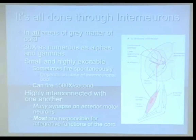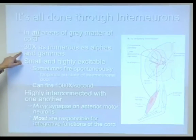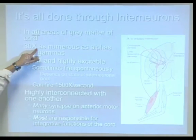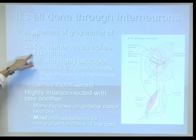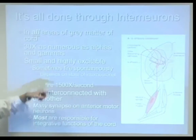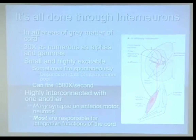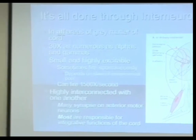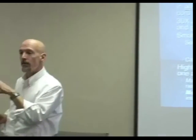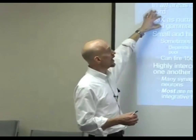Gray matter is cell bodies and interneurons. They are 30 times as numerous as alpha and gamma motor neurons. Remember, gammas were one-third — so interneurons are 30 times as numerous.